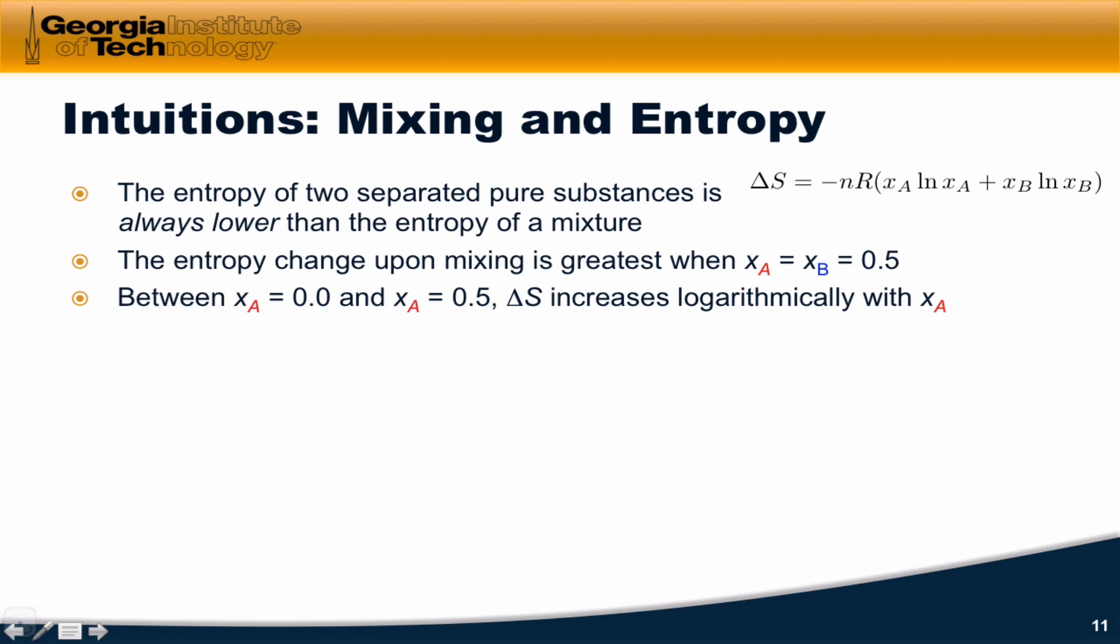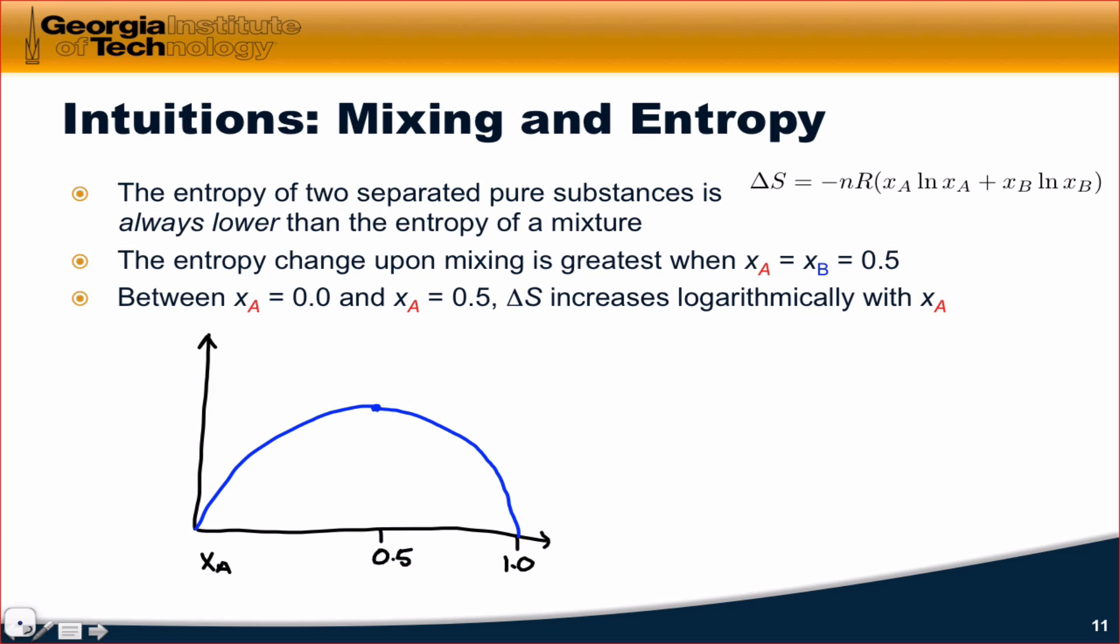Between XA equal to 0.0 and 0.5, delta S increases logarithmically with the mole fraction. So we get an increase up to XA equal to 0.5 that looks something like this, and if we keep calculating as we move to higher and higher mole fractions of A, this actually decreases. So delta S actually decreases back down to zero when the mole fraction of XA is equal to 1. And this should make sense because above a mole fraction of 0.5, gas A starts predominating over gas B. Since both are ideal gases, there's a symmetry to this graph.